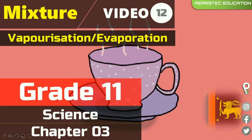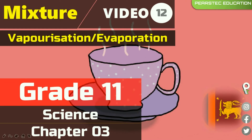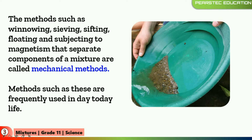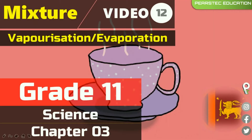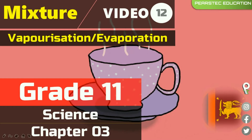Now, we already talked about the mechanical method of separation, and we covered it under five different categories: winnowing, sieving, sifting, floating, and subjecting to magnetism. These methods that separate components of mixtures are called mechanical methods. Now let's get into today's subject — vaporization or evaporation.